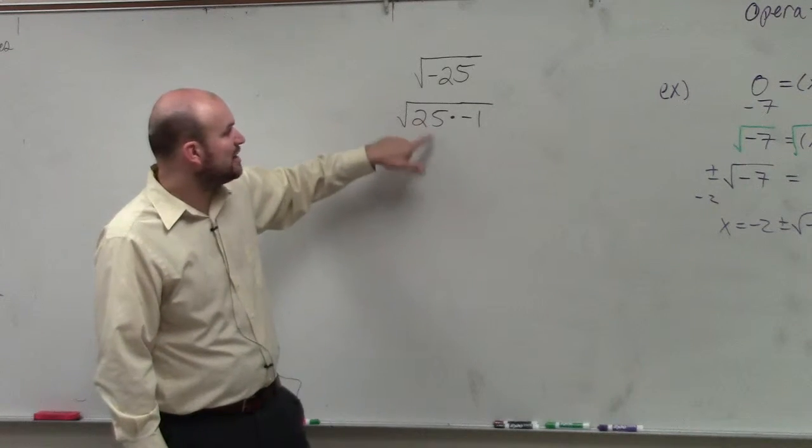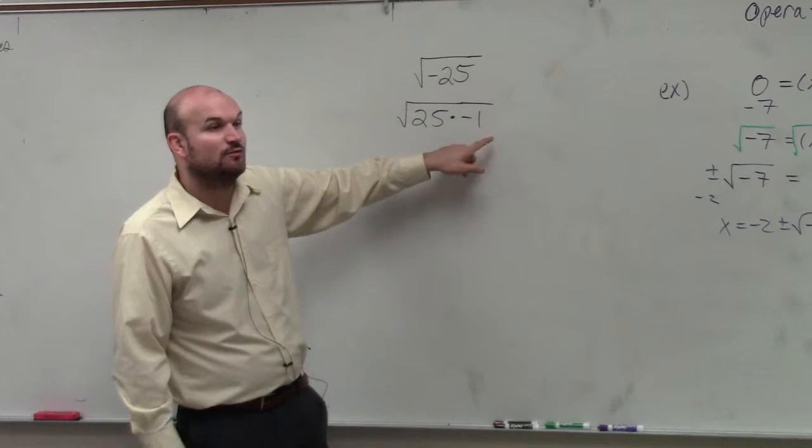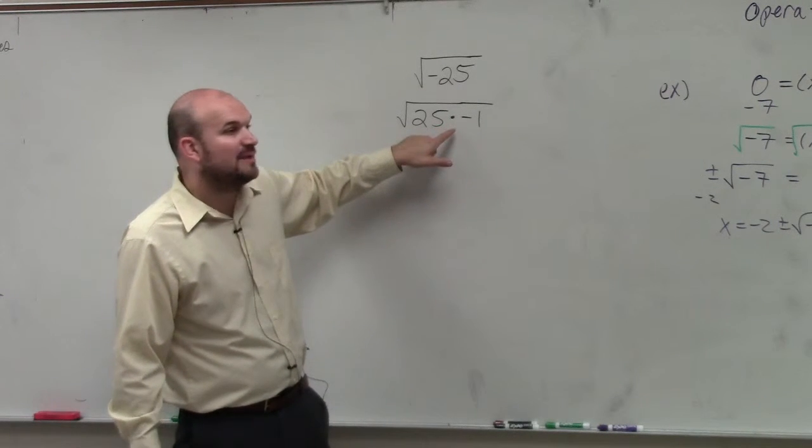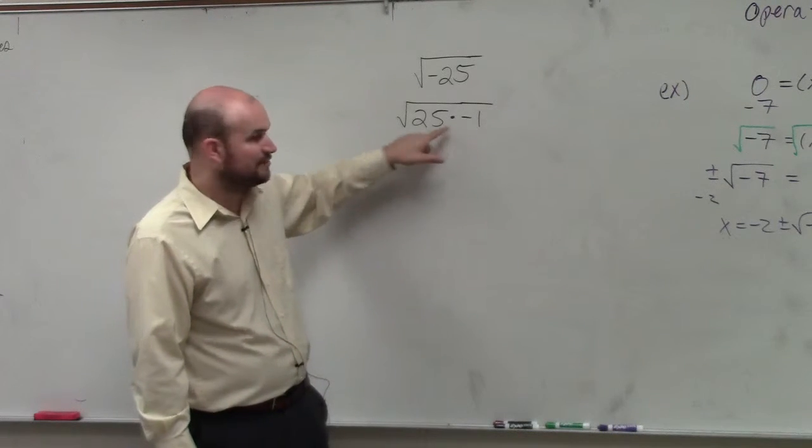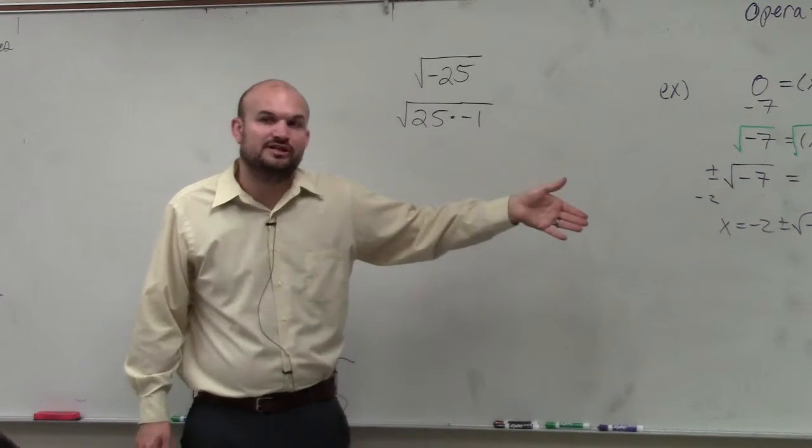Here, I can take the square root of 25 and the square root of negative 1 separately. If they were separated by addition or subtraction, you could not do that. That's what everybody does - they see it work for multiplication and think they can do it for addition and subtraction.